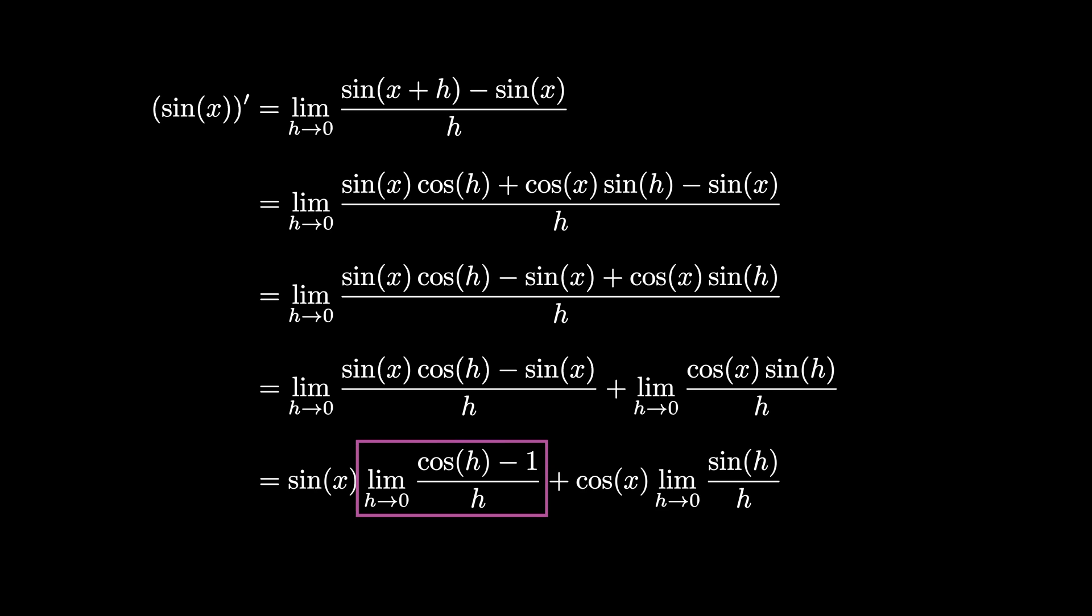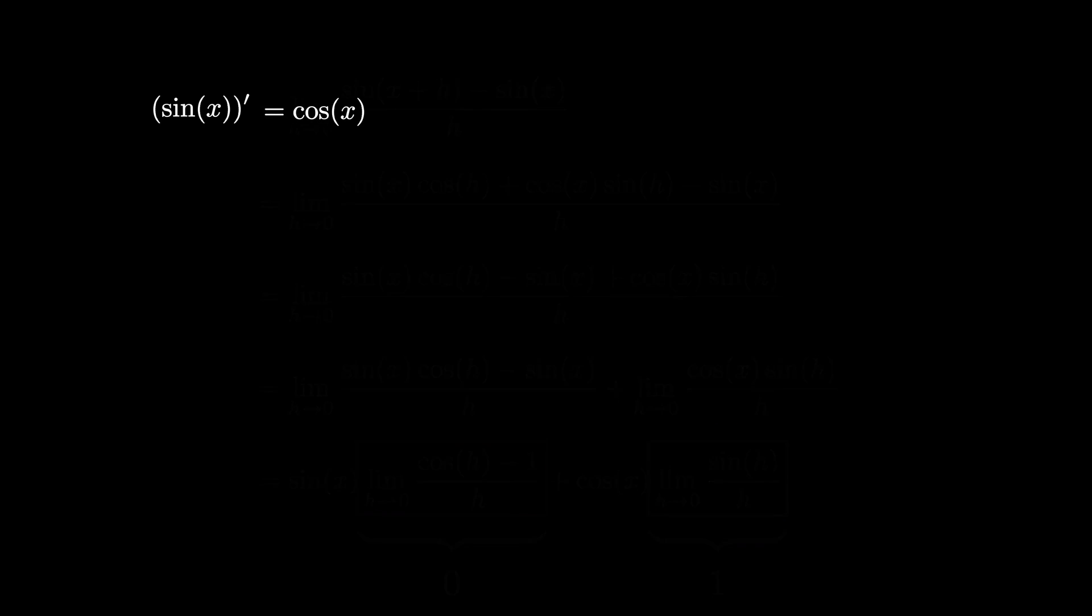From here, we can use geometric reasoning to show that the limit as h goes to 0 of cosine h minus 1 divided by h is 0, and the limit as h goes to 0 of sine of h over h is 1. Therefore, this quantity equals the cosine of x, so we see that the derivative of the sine function is equal to the cosine function.